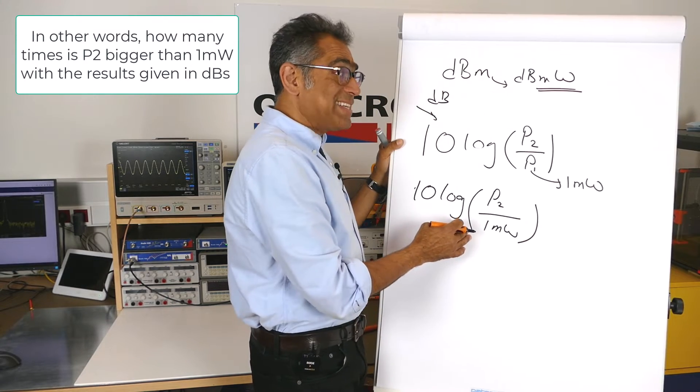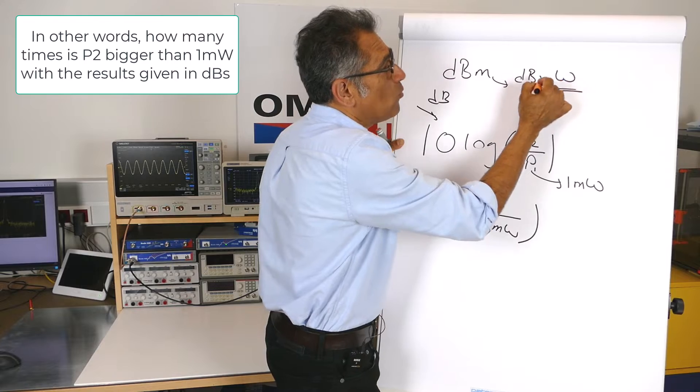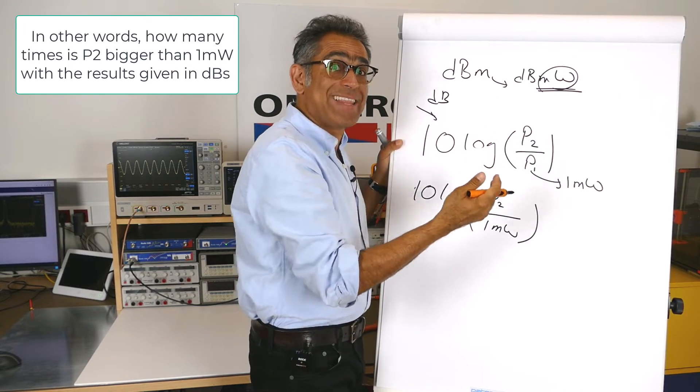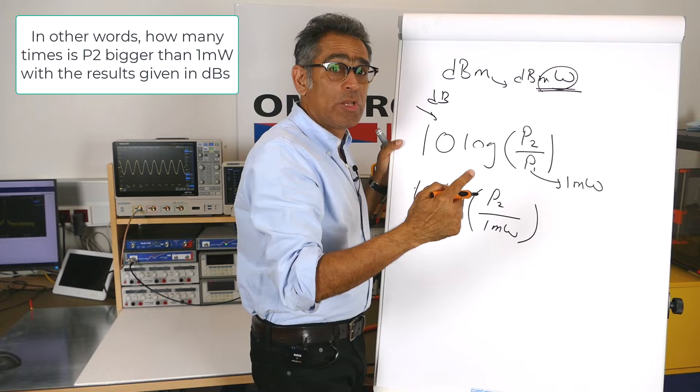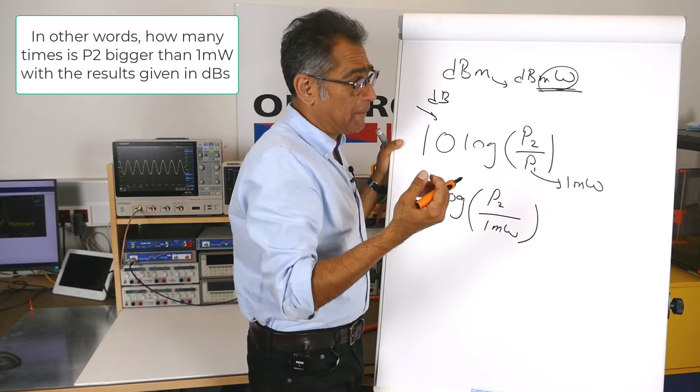So what we do next is we add a mW after dB in order to show that this is relative to a 1 mW signal or power.